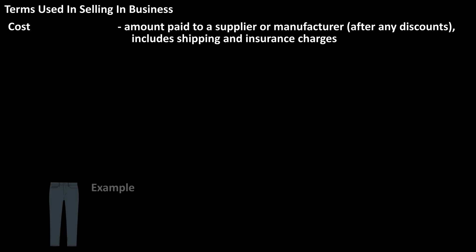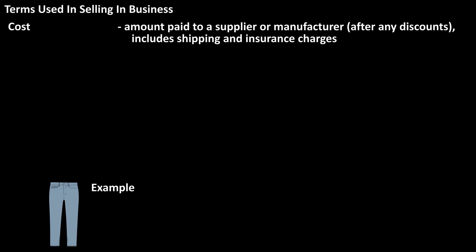So, if a retailer purchases jeans from a manufacturer for $32, after any discounts, shipping, and insurance, that is the cost.